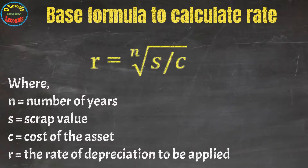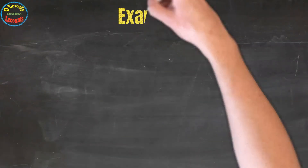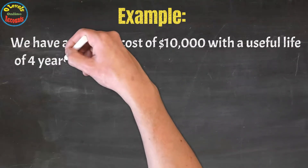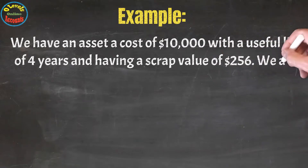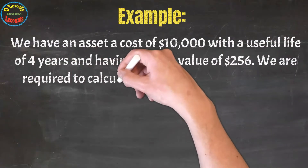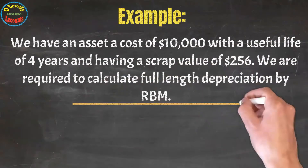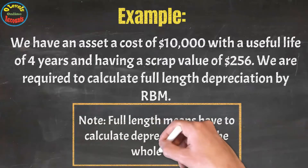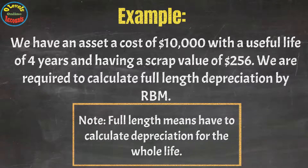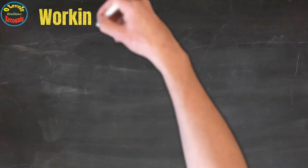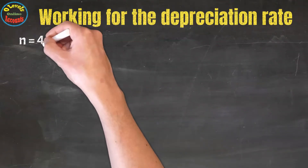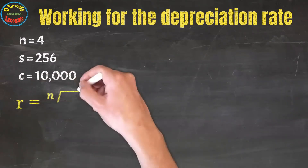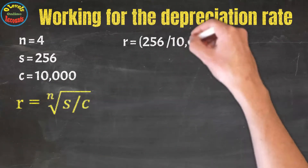Let's check out the example. We have an asset at a cost of $10,000 with a useful life of 4 years and a scrap value of $256. We are required to calculate full-length depreciation by RBM — full length means we calculate depreciation for the whole useful life. In this question, we have n = 4, S = 256, and cost = 10,000.